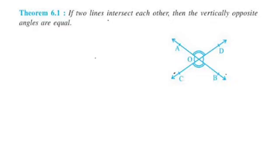Now we have the first theorem of 6.1: if two lines intersect each other, then the vertically opposite angles are equal.